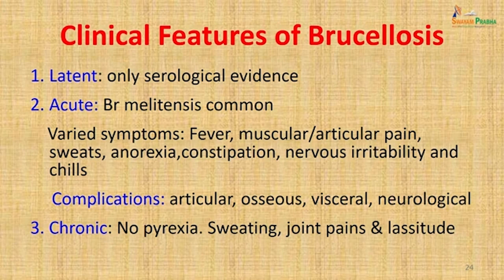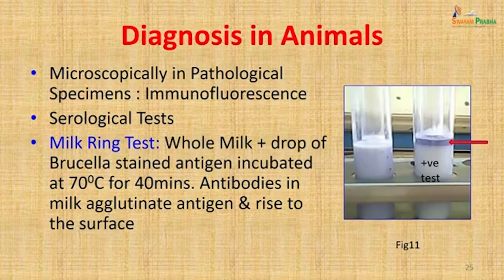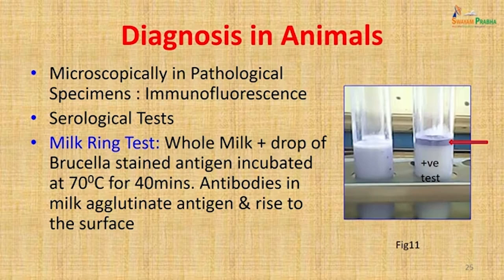Animals that are infected can also be diagnosed with brucellosis. Diagnosis in animals can be done microscopically, by immunofluorescence, or by the same serological tests used in humans — the Rose Bengal test and SAT. More commonly in cattle it is done by the milk ring test: whole milk is taken, a drop of Brucella stained antigen is added, incubated at 70°C for 40 minutes. Antibodies in the milk agglutinate the antigen, which rises to the surface forming a ring. The picture shows positive and negative tests.